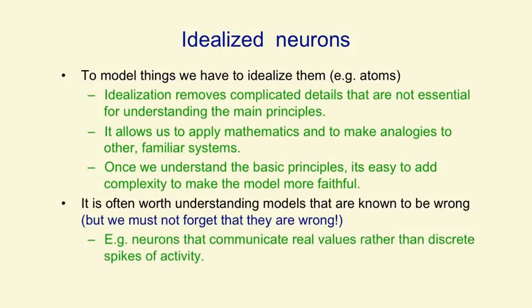So, for example, a lot of work on neural networks uses neurons that communicate real values rather than discrete spikes of activity. And we know cortical neurons don't behave like that, but it's still worth understanding systems like that. And in practice, they can be very useful for machine learning.